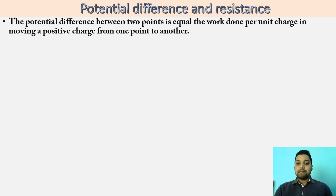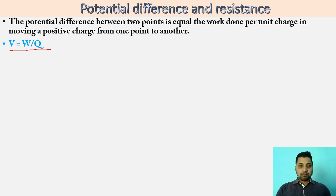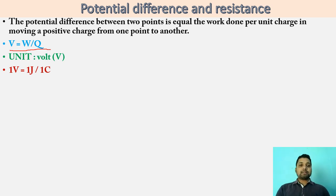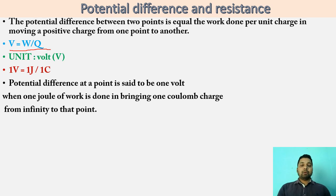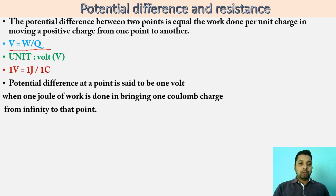The unit of potential difference, named after Alessandro Volta, is the volt. One volt is equal to one Joule by one Coulomb. Joule is the SI unit of work done and Coulomb is the SI unit of charge. So one Joule by one Coulomb gives one volt. We can define: potential difference is said to be one volt when one Joule of work is done to bring one Coulomb of charge from an infinite point or from the source to that point. Potential difference can be measured by an instrument called the voltmeter; in case of current, we use an ammeter.